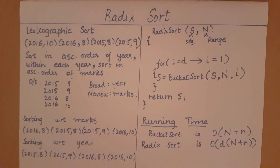This is how radix sort works, this is how you write the pseudocode algorithm for it, and this is how you determine the big O notation of radix sort.